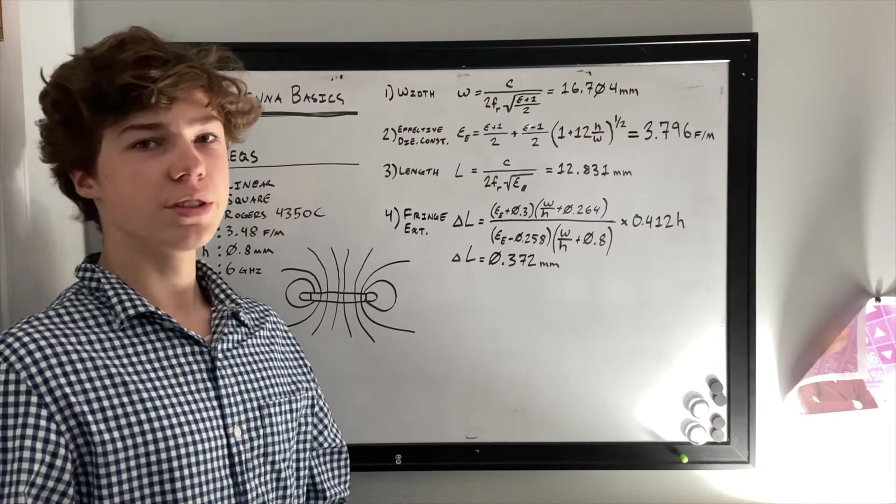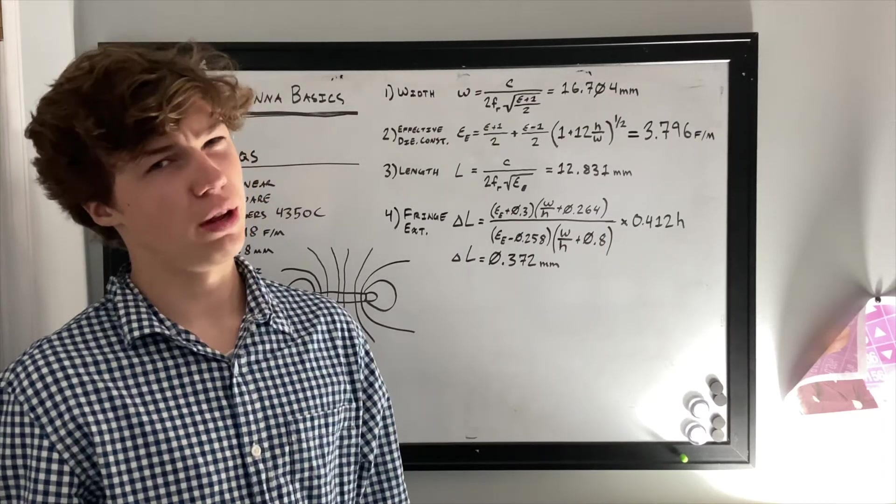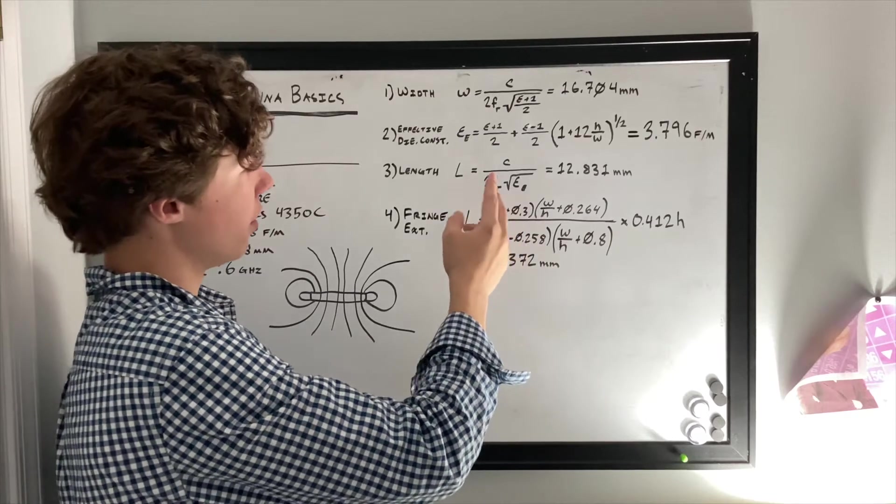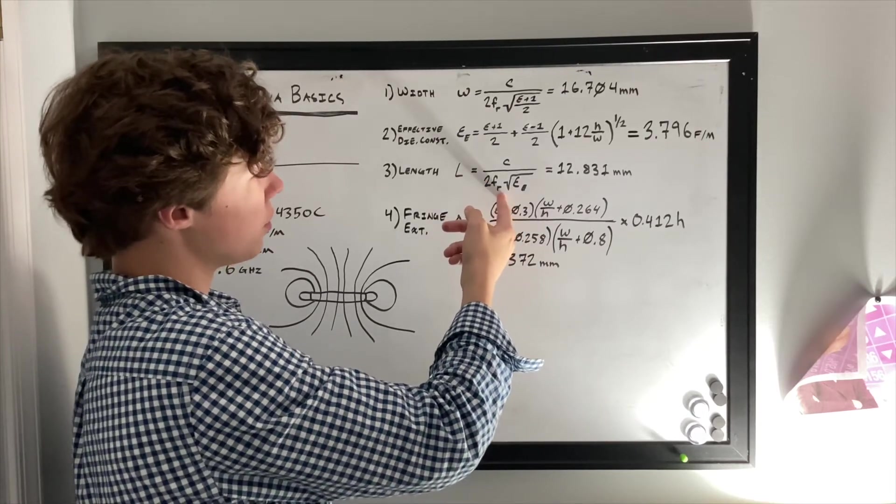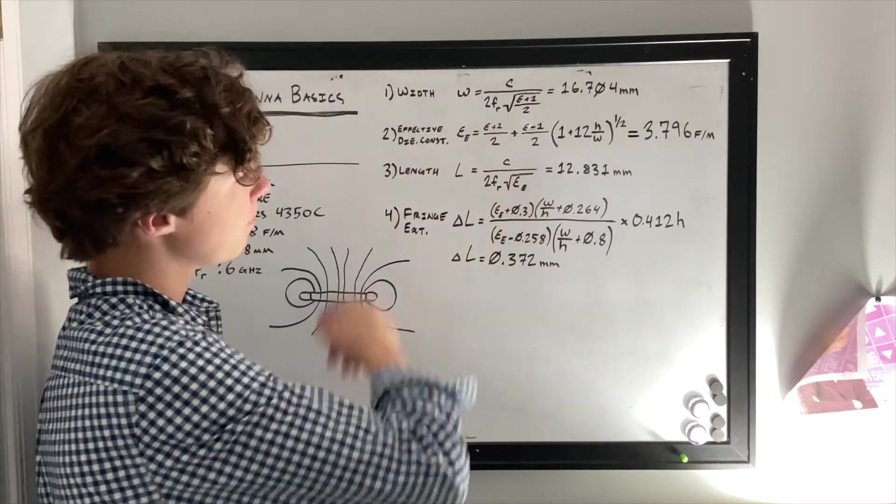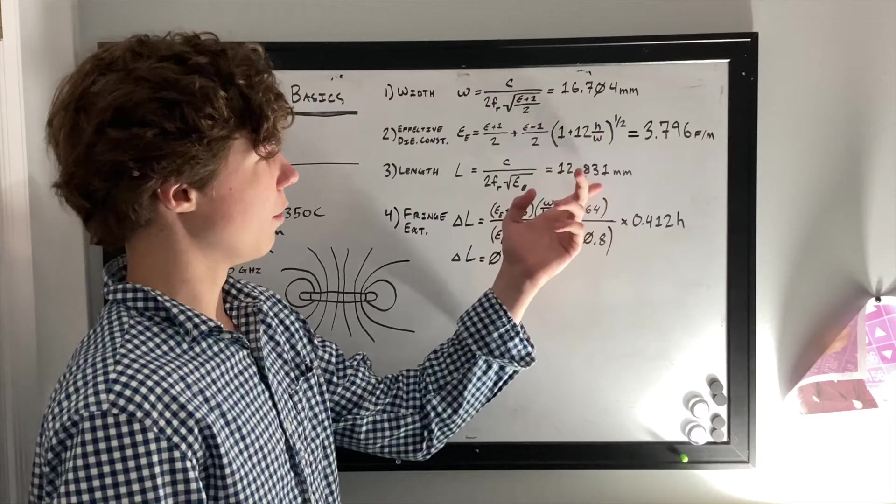Okay, so here we see the equation for length, which again strongly correlated to wavelength, which is L equals the speed of light over two times the resonant frequency times the square root of the effective dielectric constant. And for ours, again, we got 12.831 millimeters.